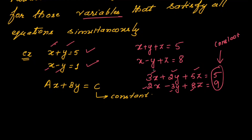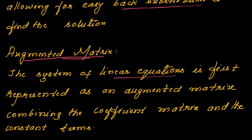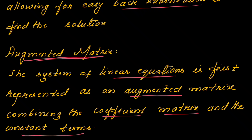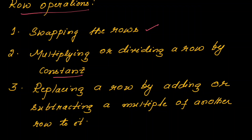In the Gauss elimination method, given these equations, you are going to find out the values for x, y, and z. There are steps to get those values, and certain row operations are used. The system of linear equations is first represented as an augmented matrix combining the coefficient matrix and the constant terms. You can either swap rows, multiply or divide a row by a constant, or replace a row by adding or subtracting a multiple of another row.